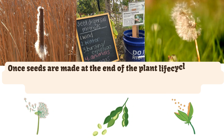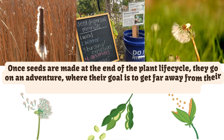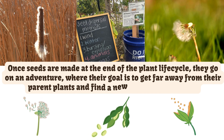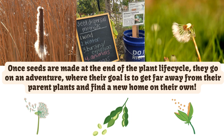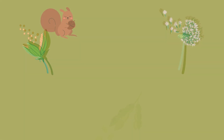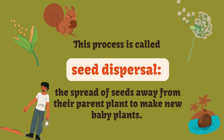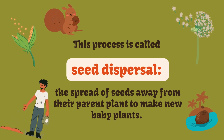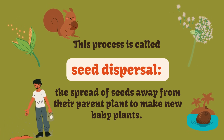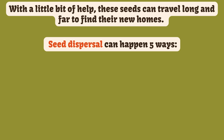Once seeds are made at the end of the plant life cycle, they go on an adventure where their goal is to get far away from their parent plants and find a new home on their own. This process is called seed dispersal — the spread of seeds away from their parent plant to make new baby plants. With a little bit of help, these seeds can travel long and far to find their new homes.